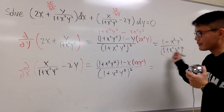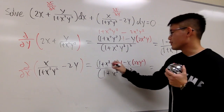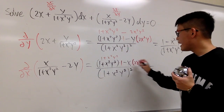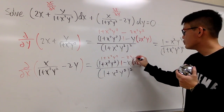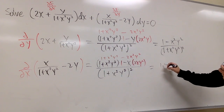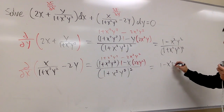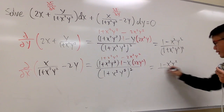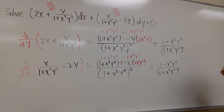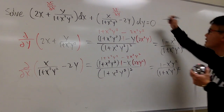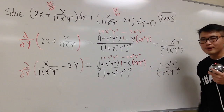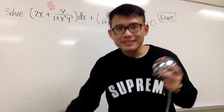And yes, they are the same. The numerator works out to (1 + x²y²) minus 2x²y², which simplifies to 1 minus x²y², over (1 + x²y²)². This right here confirms it is exact. Now let's solve it.